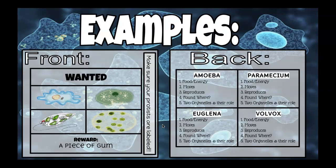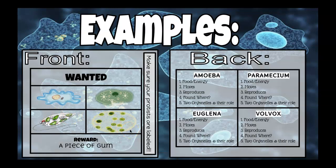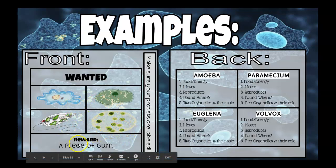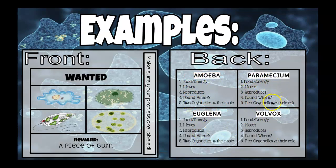Here is an example of front versus back. You'll have 'Wanted' at the top and your four protists labeled — the example pictures were not labeled because I didn't want you to steal my pictures, so make sure yours are labeled. On the back, separate it into four sections and list your information under each protist: how it gets its food, how it moves, how it reproduces, where it lives, and the two organelles and their roles.